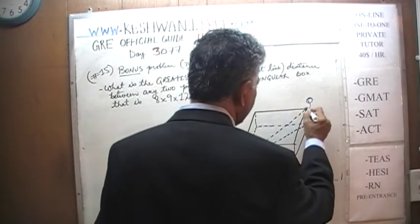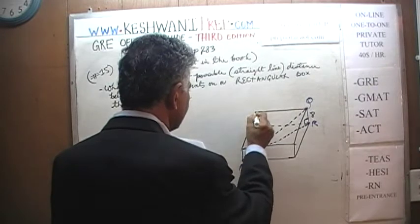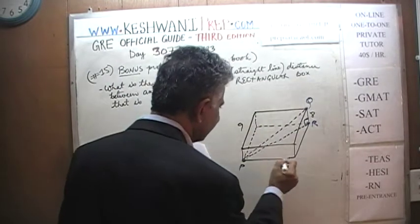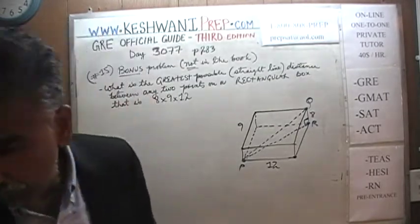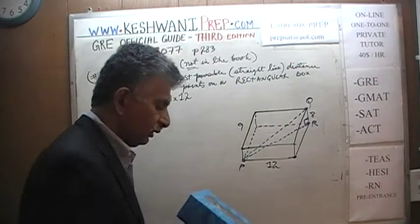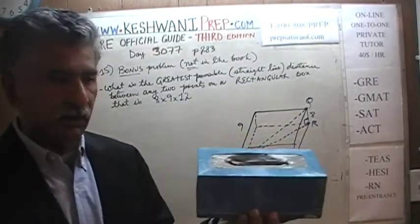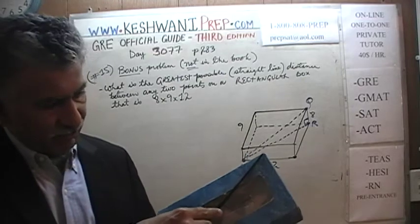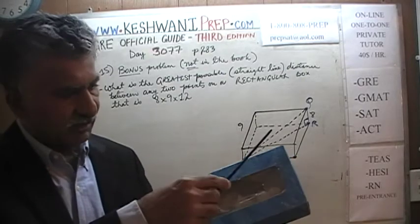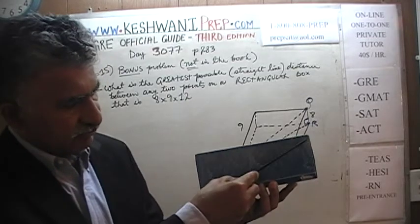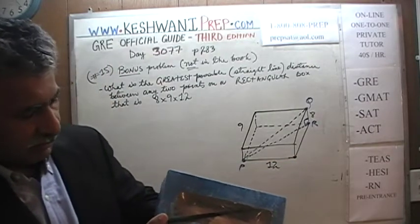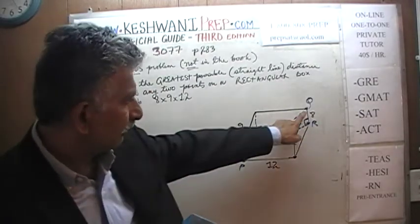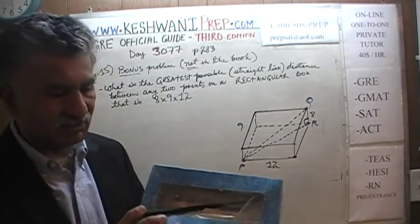Let's call the vertical distance 8, this distance from here to here 9, and this distance from here to here 12. In my hand here I have a rectangular box. The greatest possible distance is not this one — my pointer does not fit there. We put it inside, like this — now it fits. From that corner, from the inside, from Q to P — that's the greatest possible straight-line distance.